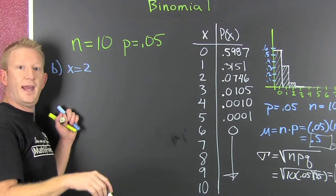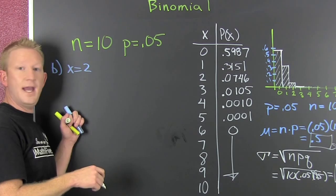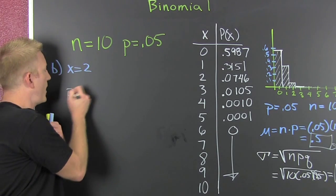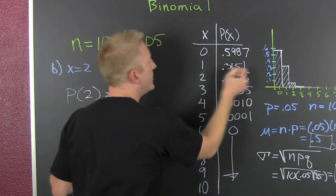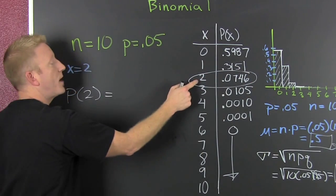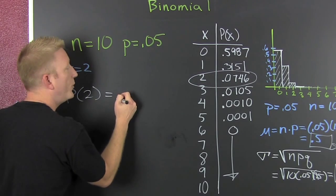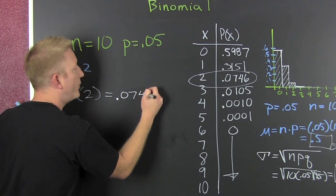They're looking for the probability of 2. Can you read? This one right here. Bam! The probability of 2 is .0746.